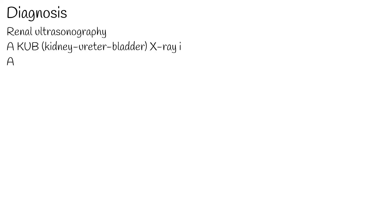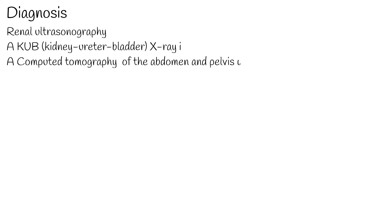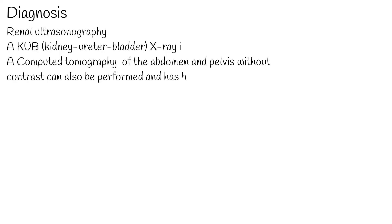For diagnosis, renal ultrasonography can sometimes be useful because it gives details about the presence of hydronephrosis, suggesting that the stone is blocking the outflow of urine. A KUB (kidney-ureter-bladder) X-ray is also an option; however, uric acid stones are difficult to assess with this imaging. A CT scan of the abdomen and pelvis without contrast can also be performed and has higher sensitivity.